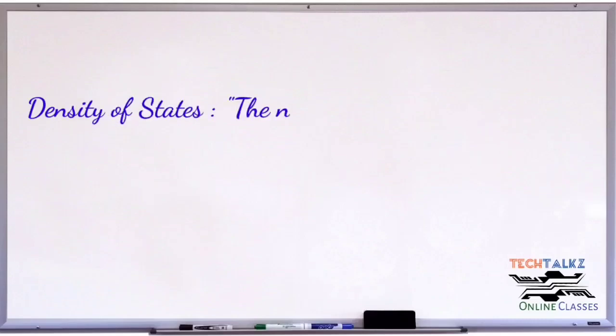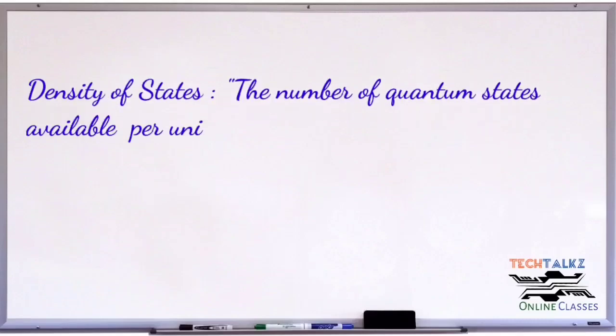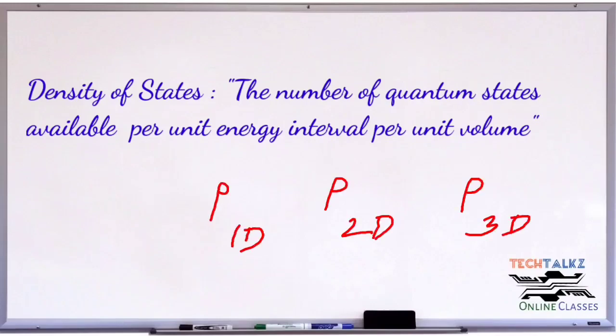We can conclude this session. The definition of density of states is the number of quantum states available per unit energy interval per unit volume. We can also calculate the density of states of 1, 2, and 3 dimensions. In the coming sessions, we will see the derivation part of density of states and energy dependence and dimensionality. Thank you.